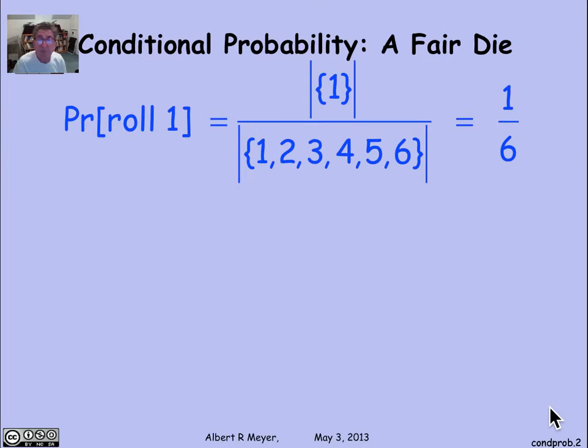And if I ask what's the probability that in one roll I roll a 1, well, it's going to be the number of outcomes involving my rolling a 1 divided by the total number of outcomes. It's 1 sixth. The probability of any given face of a six-sided fair die is 1 sixth.